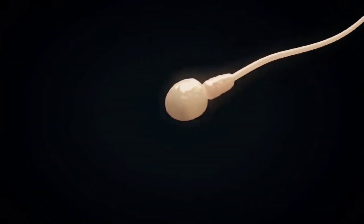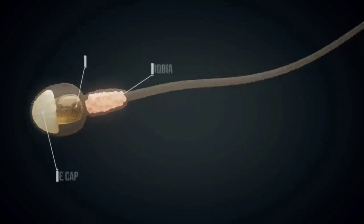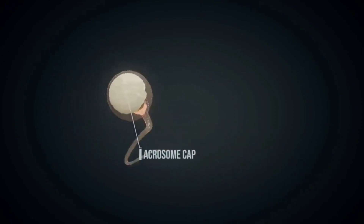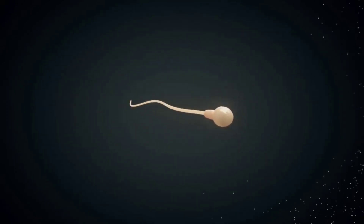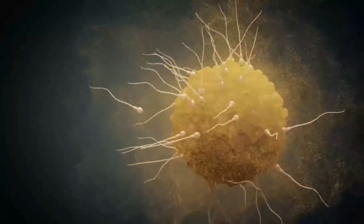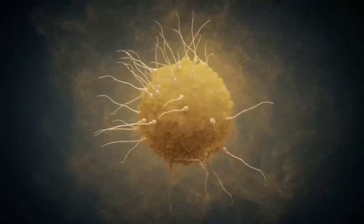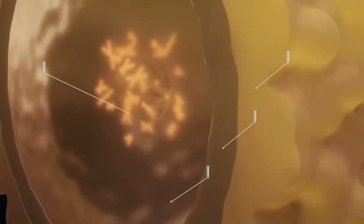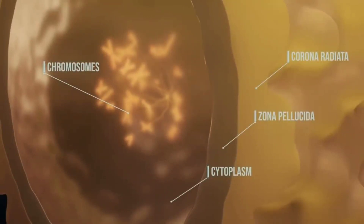Thousands of sperm cells, barely visible, all have only one goal: reaching the ovum. A sperm cell's nucleus contains the male's genetic information. Through messenger substances emitted by the egg cell, the sperm cells find their way to the ovum. The goal of all sperm cells is to penetrate the two outer layers to reach the chromosomes.